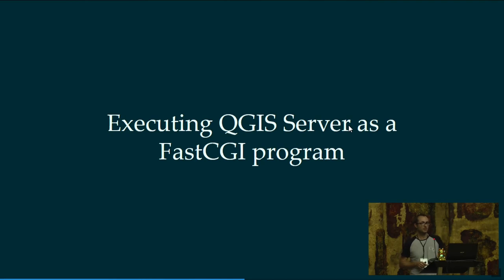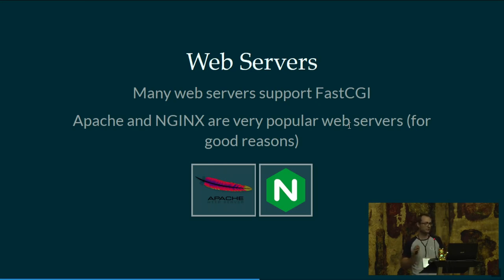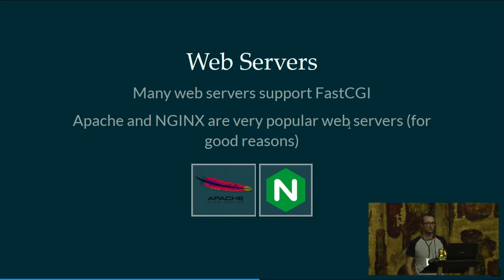Let's look at how we can execute QGIS server as a FastCGI program in more detail. You have to have a web server first, because as a FastCGI program, QGIS server does not know anything about HTTP — no HTTP support, it's just a FastCGI application. So you need a web server that supports FastCGI. Apache and Nginx are very popular and flexible web servers that support FastCGI among other things, and we're going to focus on those for the rest of the talk.